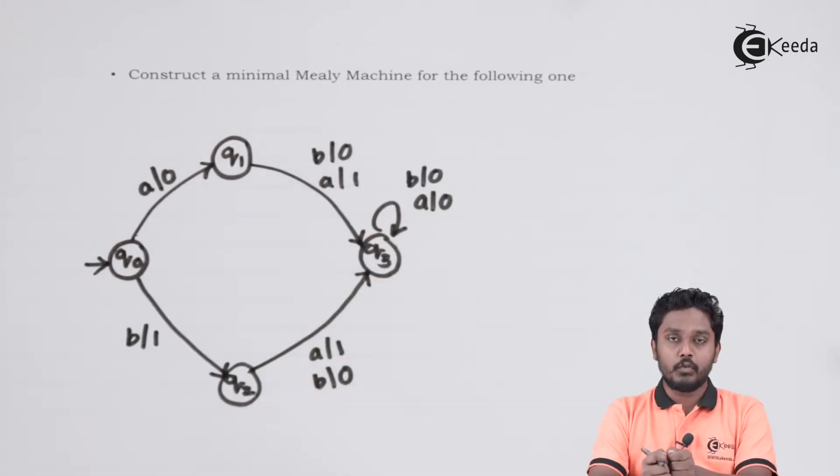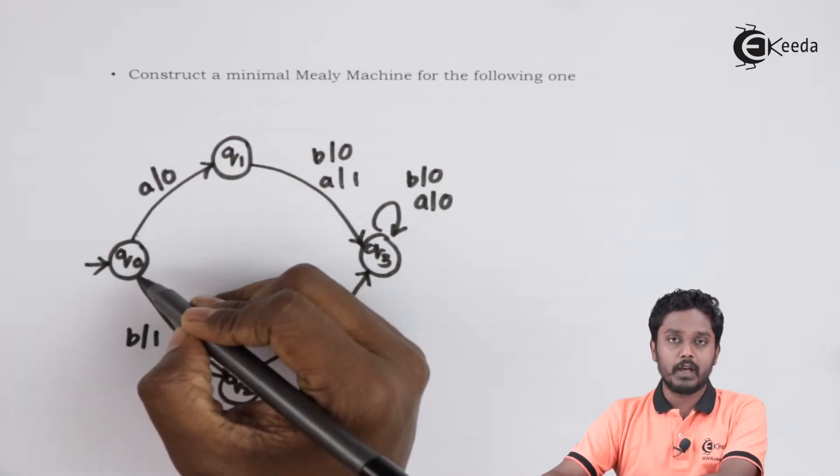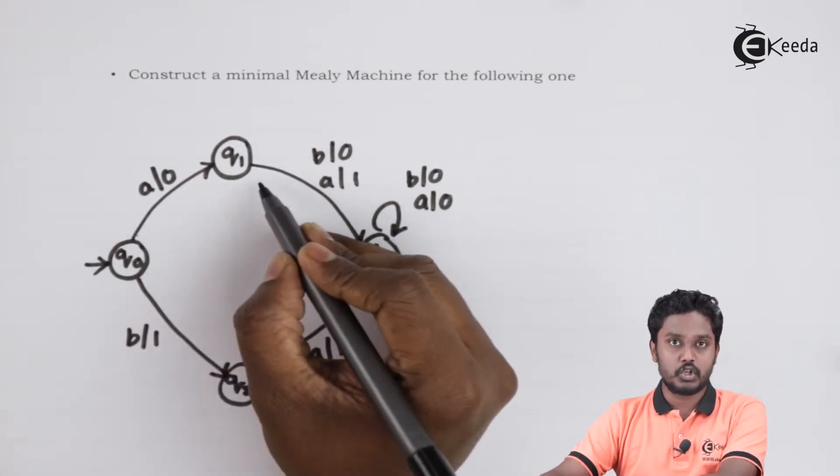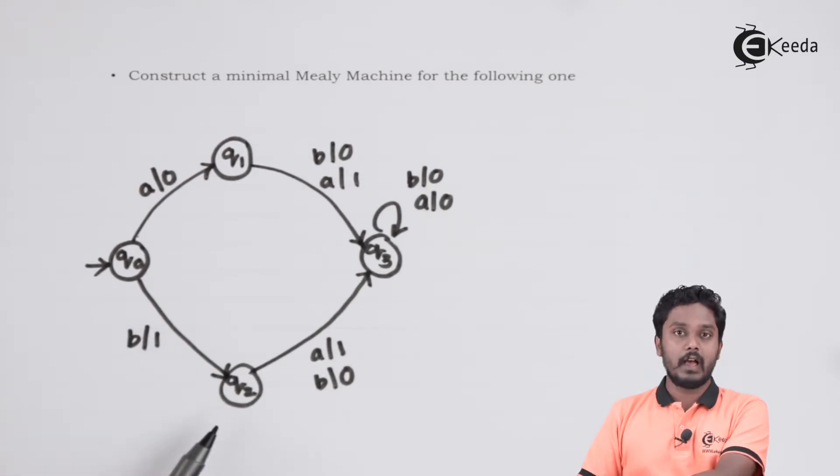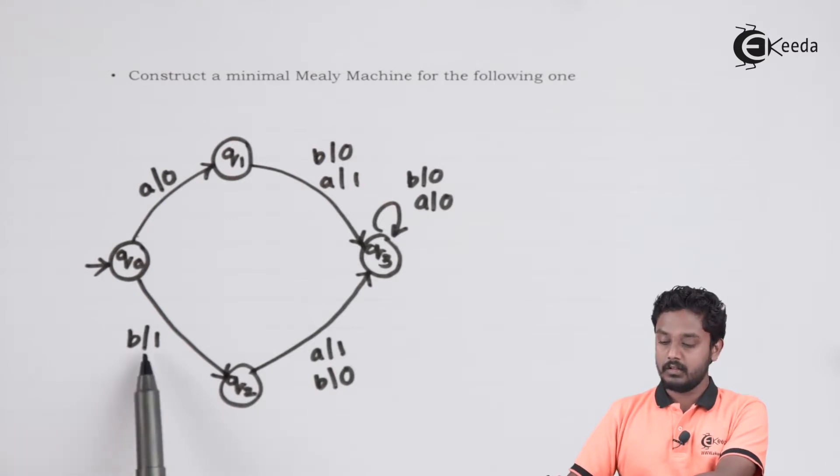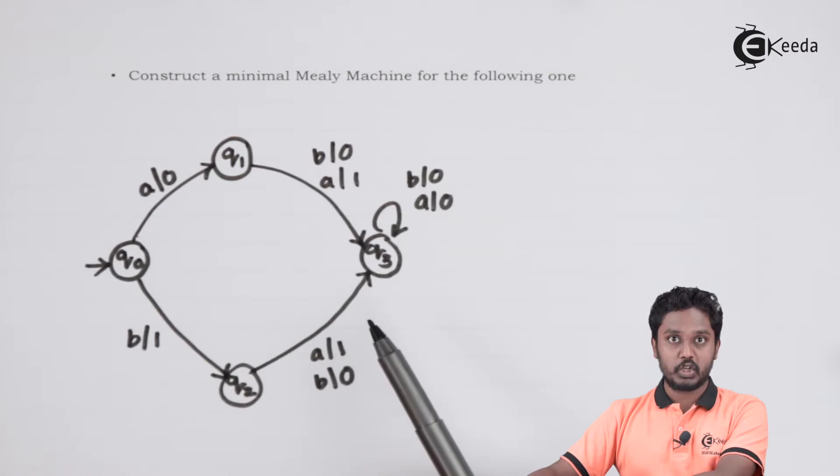Over here, Q0 is the initial state. From Q0, we have two transitions to state Q1 and to state Q2. On input A, we are going to state Q1 by giving an output 0. From Q0, we have transition to Q2 on input B with output 1. Finally, we have state Q3.